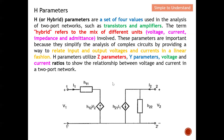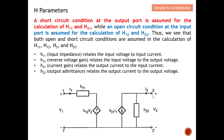Looking at the diagram of H parameters: a short circuit condition at the output — meaning V2 is shorted — is assumed for the calculation of H11 and H21. So to calculate H11 and H21, we need to short circuit the output port. On the other hand, we need an open circuit at the input, meaning I1 will be open circuit, in order to calculate H12 and H22.